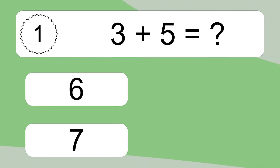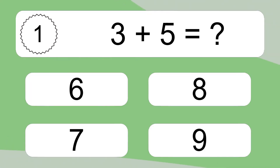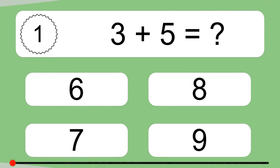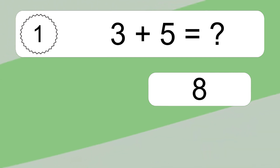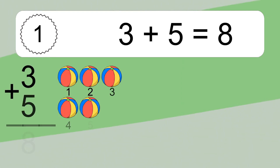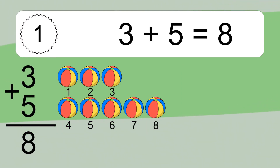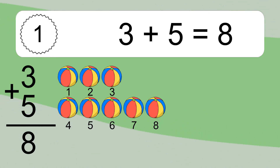3 plus 5 equals what? 3 plus 5 equals 8. Let's count it. 1, 2, 3, 4, 5, 6, 7, 8.